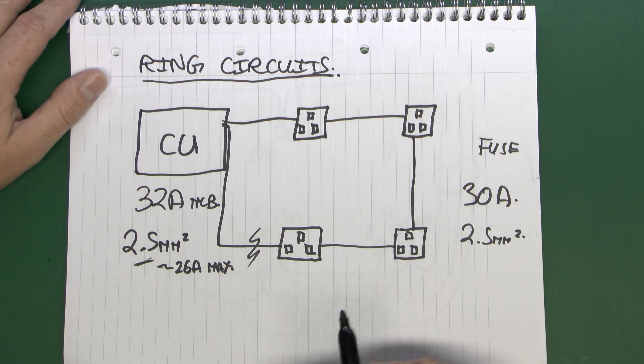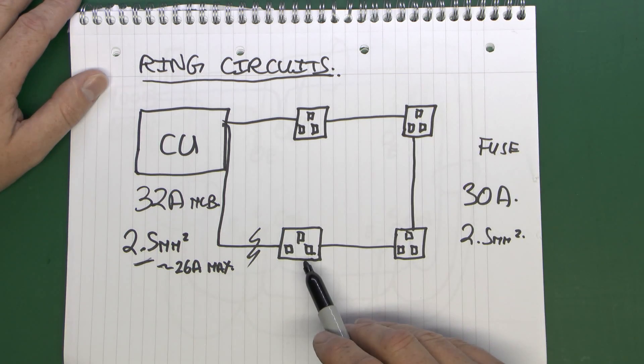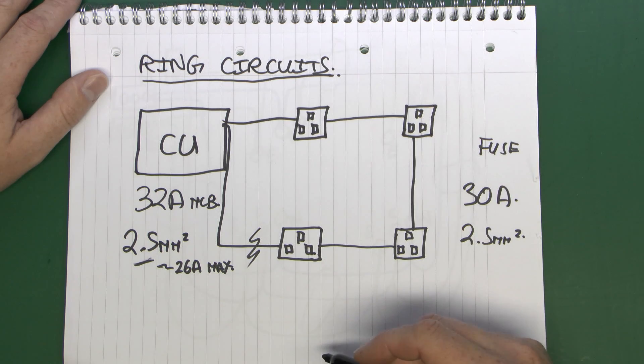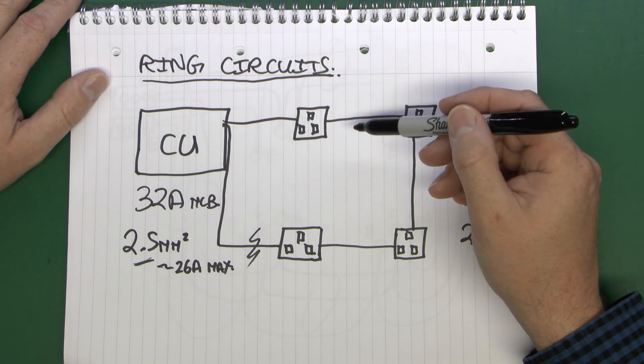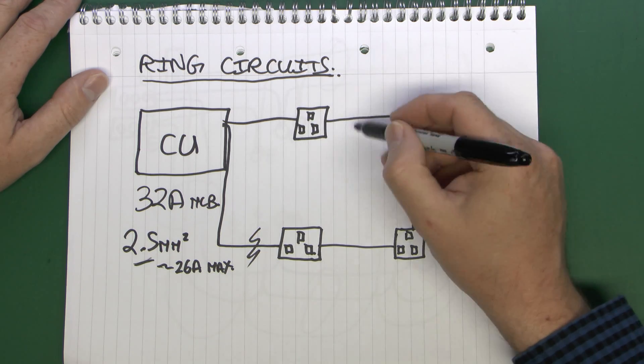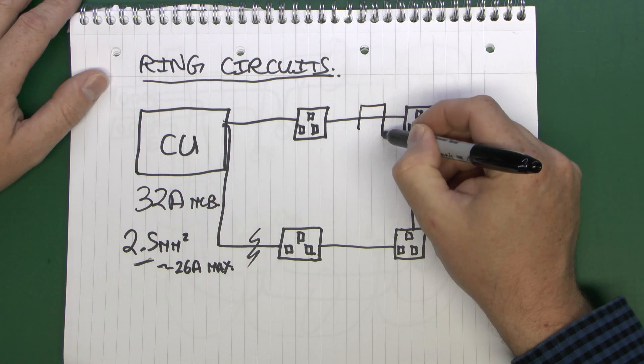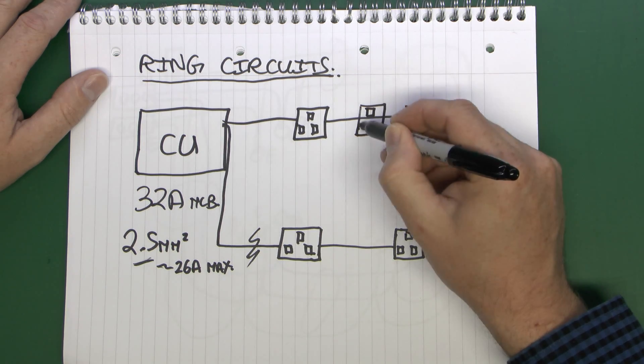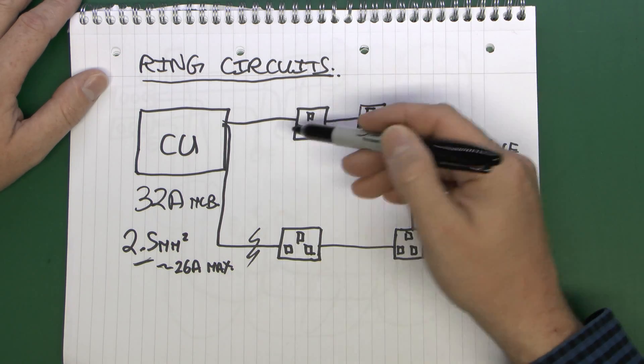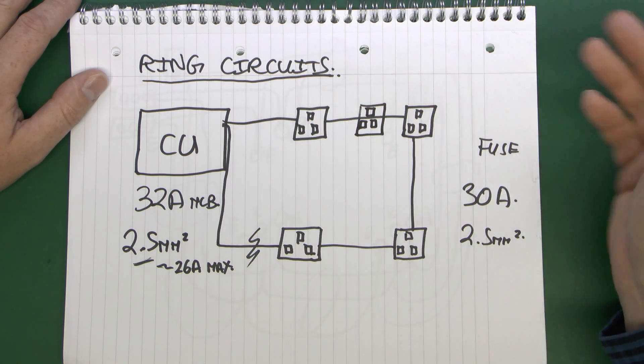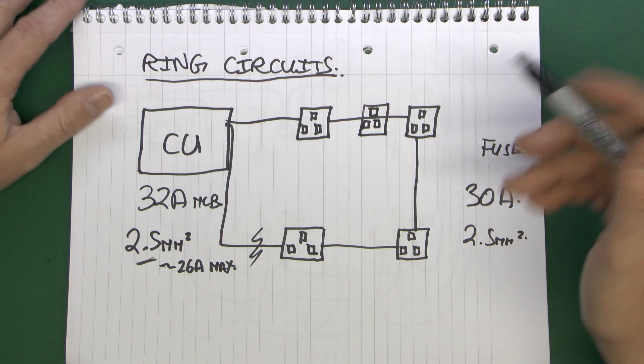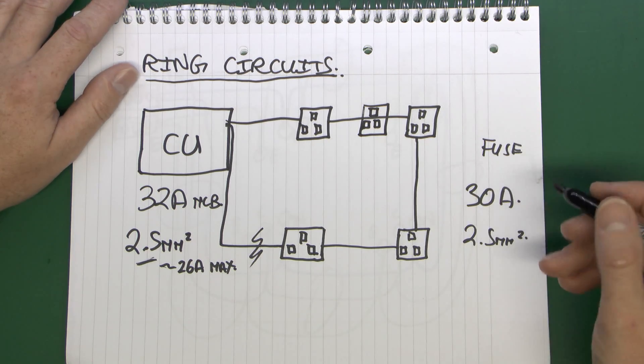If you want to actually extend the ring and add additional sockets, then the best way is to break into whatever part of the ring there is and simply extend the ring itself. So you could add another socket in here. So it's still on the main ring itself, it's just adding them in at whatever point is convenient. But in many cases that's not convenient. And what's easier is to add what's called a spur.